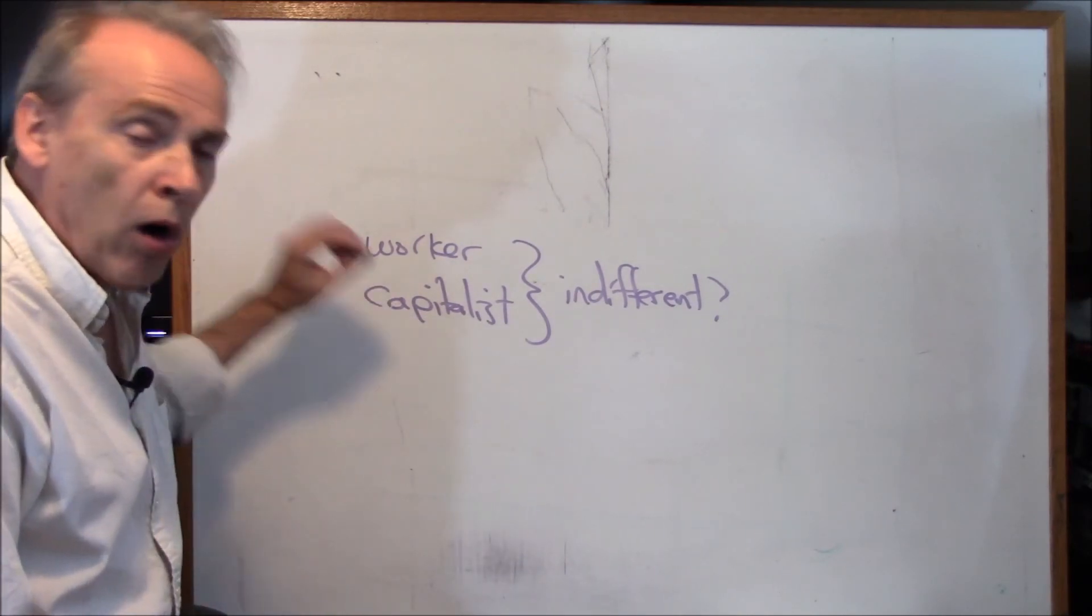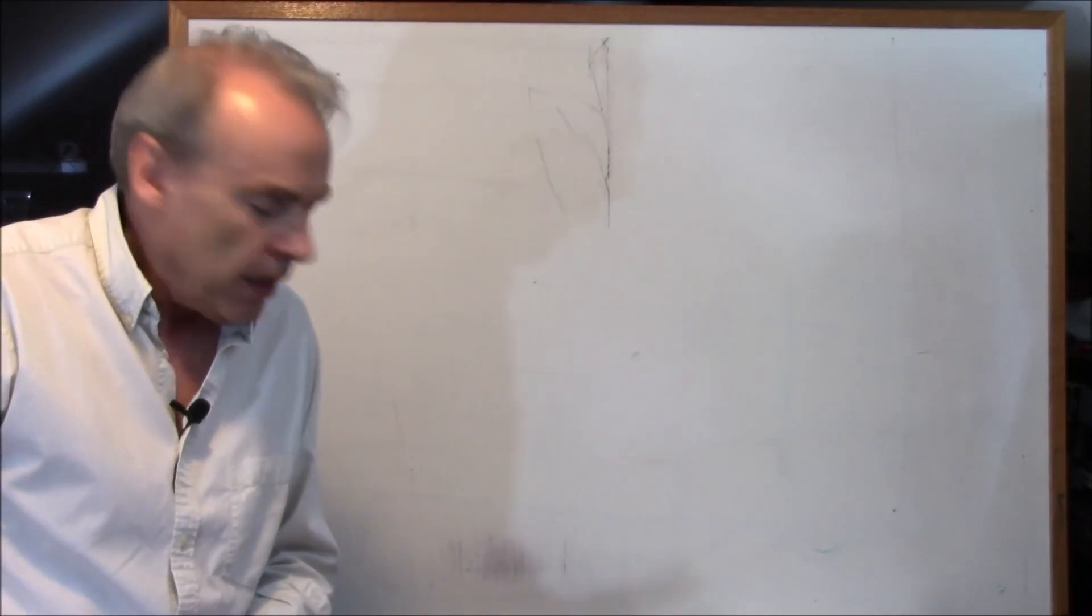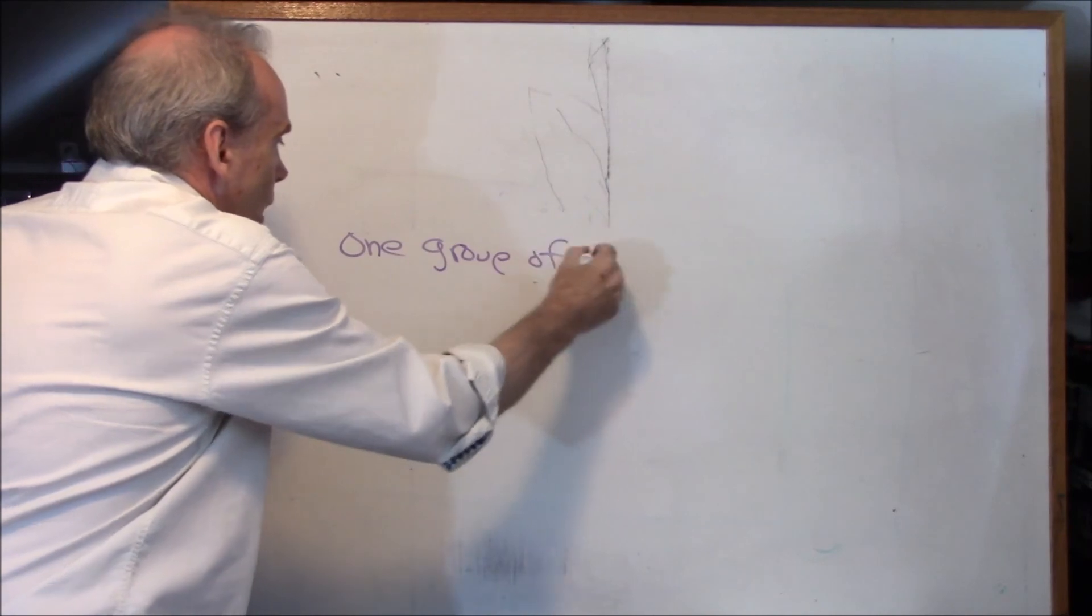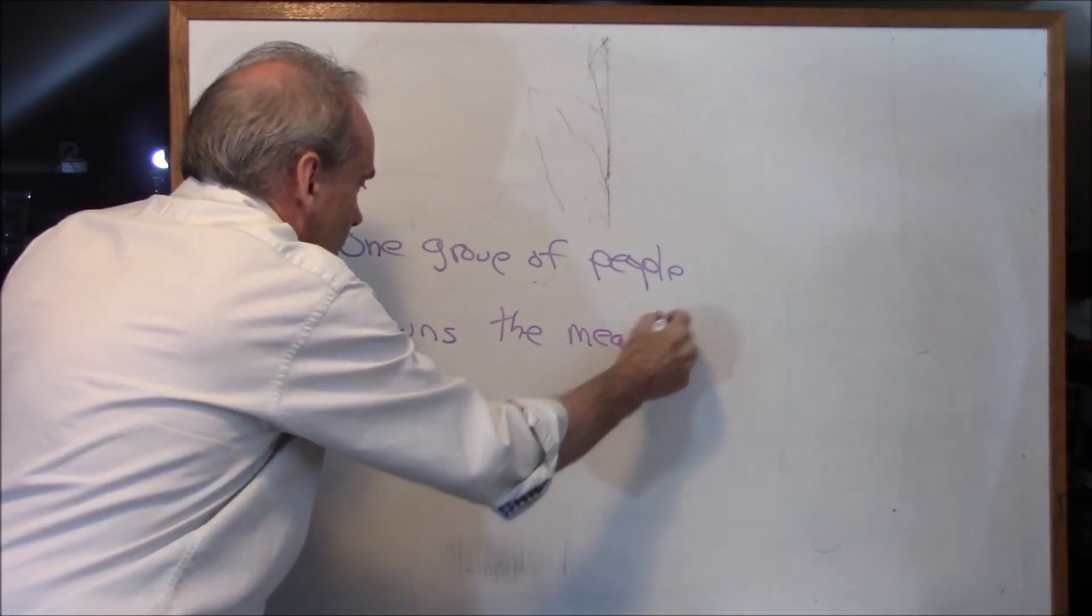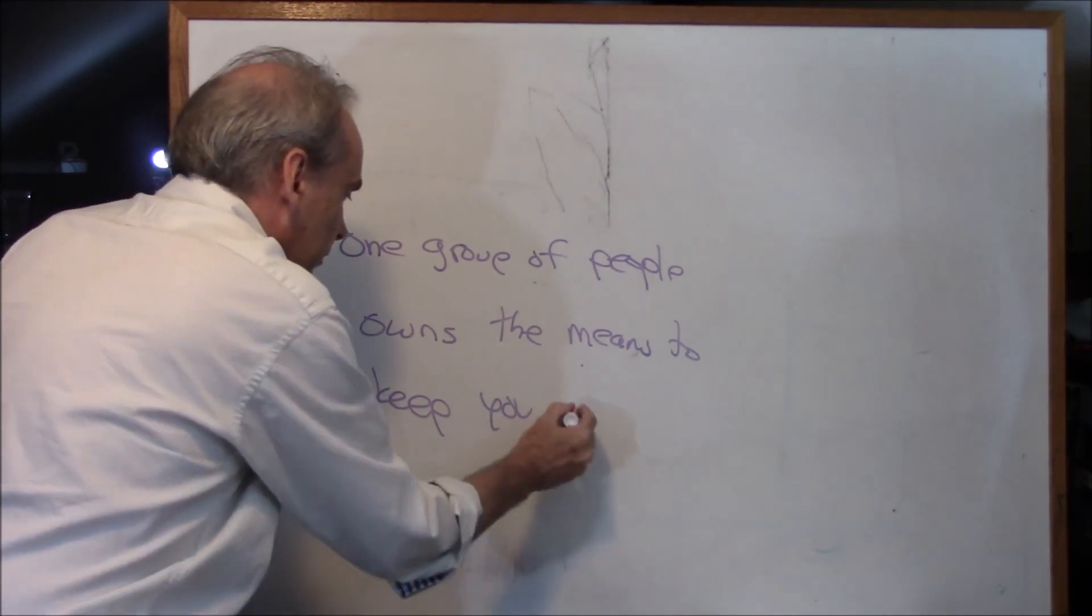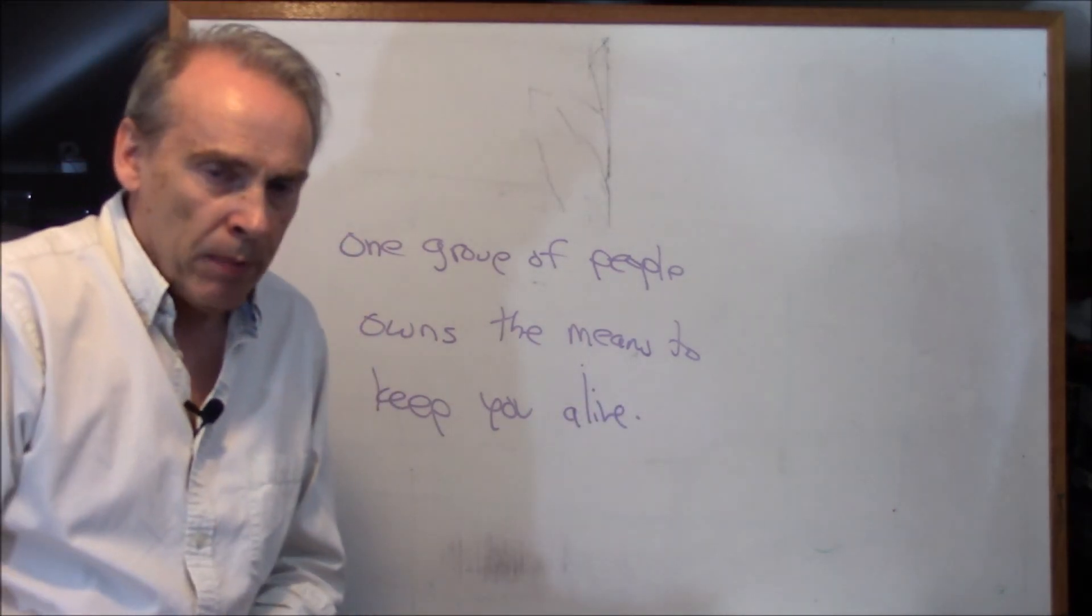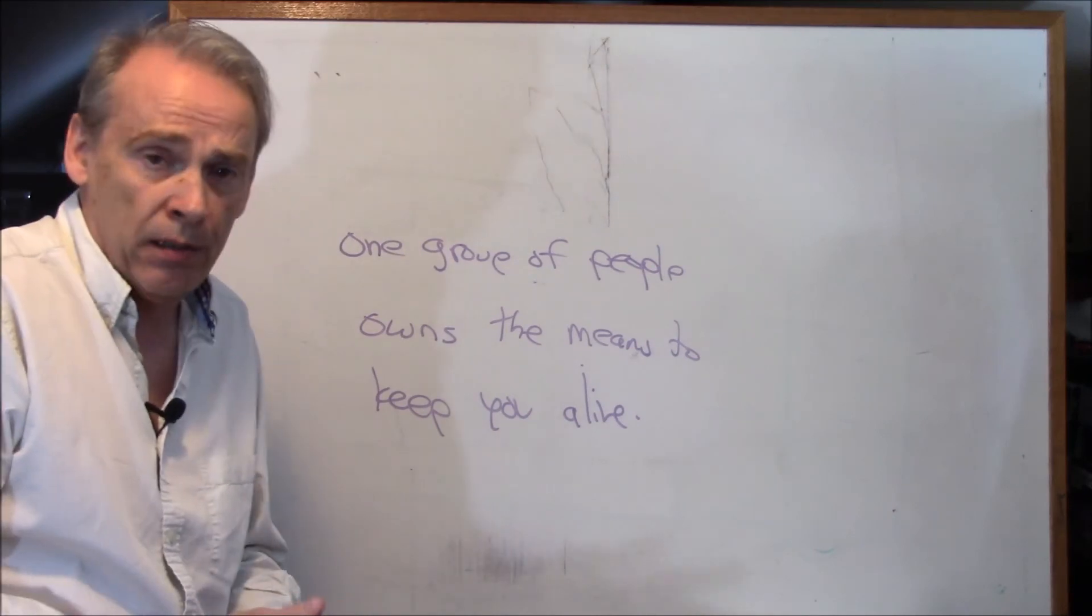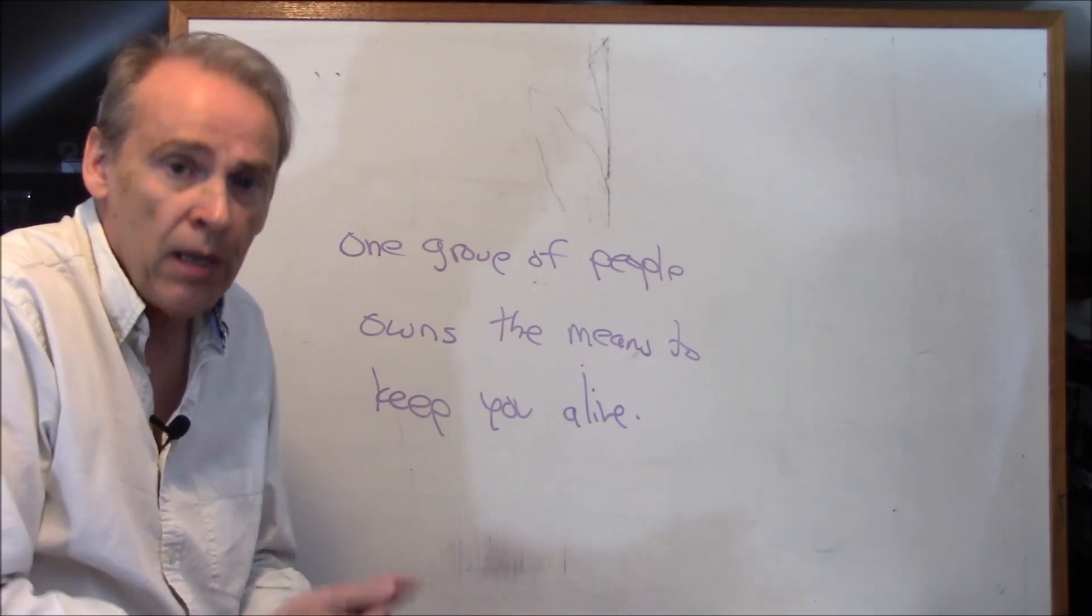That we would all rather be capitalists than workers. And the last one I put in the book was just like, and look, if we've got a system wherein one group of people owns the means to keep you alive. That's kind of scary. If one group of people owns the means of production, then that in and of itself can make you think, this is kind of a scary system. That if the capitalists own the means of production, then I have no choice but to work for the capitalists. I have to submit to the will of the capitalists.